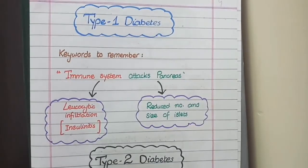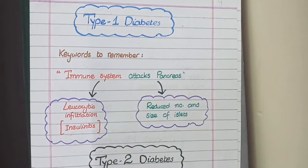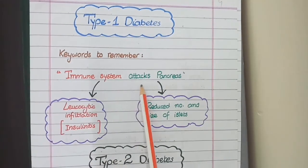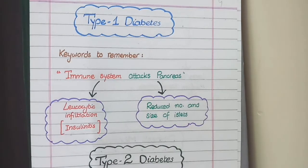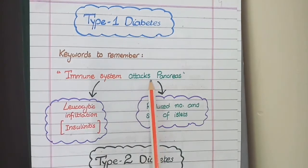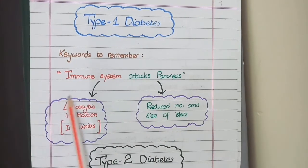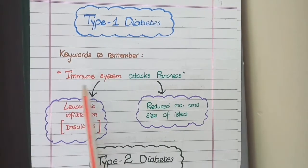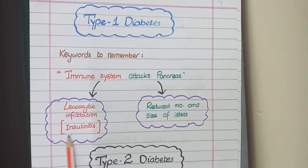Let's discuss the morphology of the pancreas in Type 1 diabetes. The keywords to remember are 'immune system attacks pancreas.' Type 1 diabetes is an autoimmune disorder in which the body's immune system reacts against its own pancreas. This is manifested as leukocyte infiltration, which is called insulinitis.